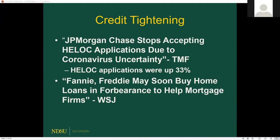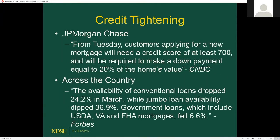JPMorgan Chase has also raised credit score requirements for new mortgages — previously around 610 to 620 minimum, now at least 700, with 20% down required. Across the country, the percentage of conventional loans available has dropped almost 25% in March. Jumbo loan availability — loans over $500,000 — dropped almost 37%. Government-backed home loans such as USDA, VA, and FHA are down about 7%.